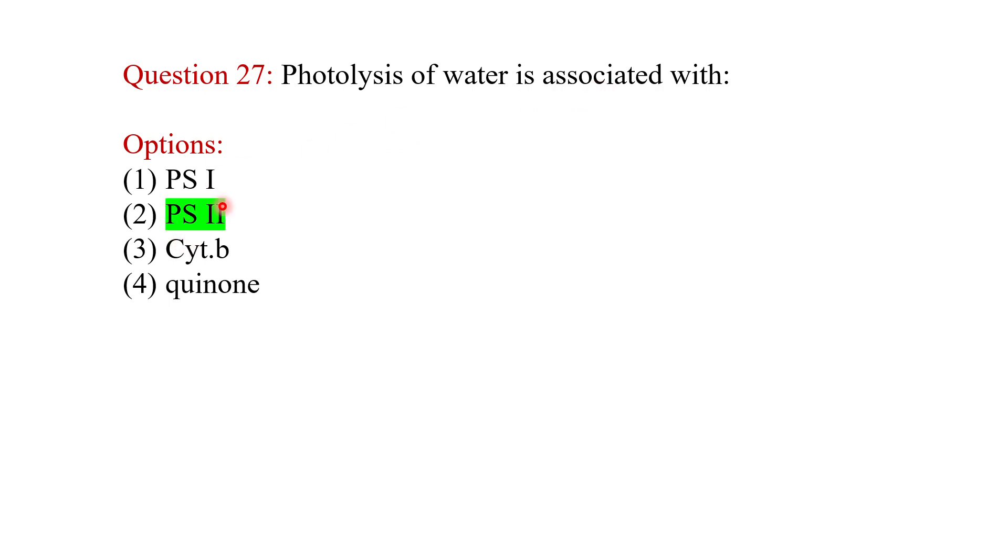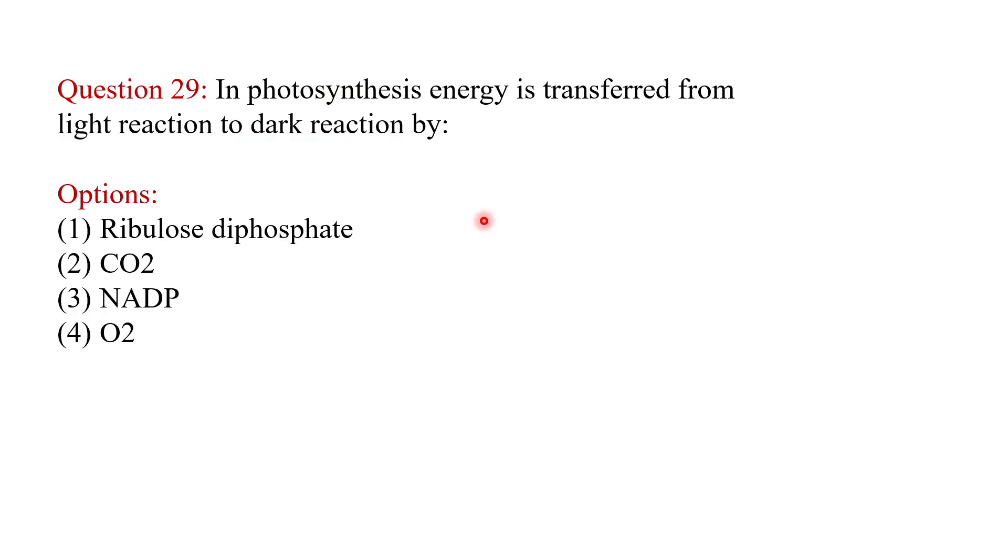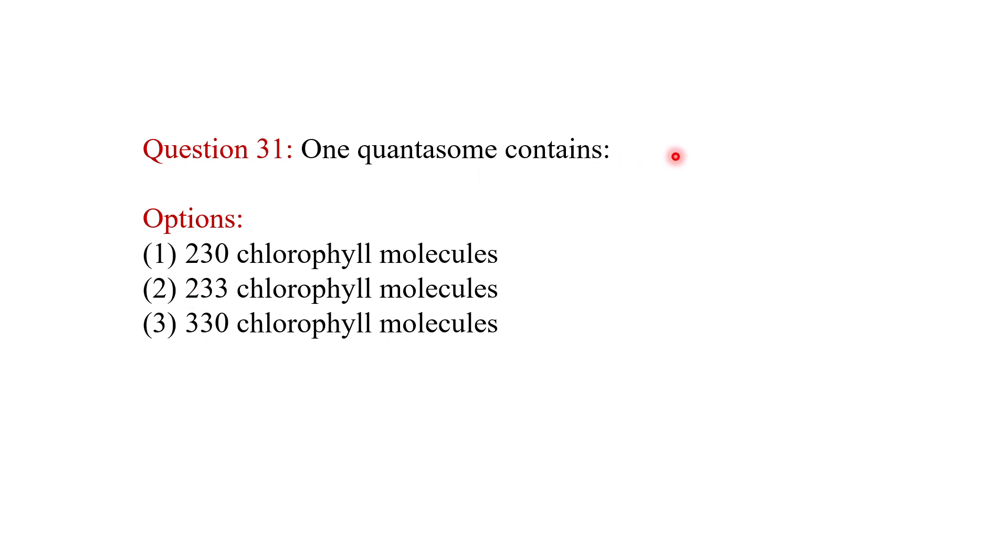Photolysis of water is associated with what? It is PS2. The organelles involved in photorespiration are mitochondria, peroxisomes, and chloroplast. In photosynthesis, energy is transferred from light reaction to dark reaction by NADPH. Fructose 1,6-bisphosphate splits into two triose phosphates by the enzyme aldolase.